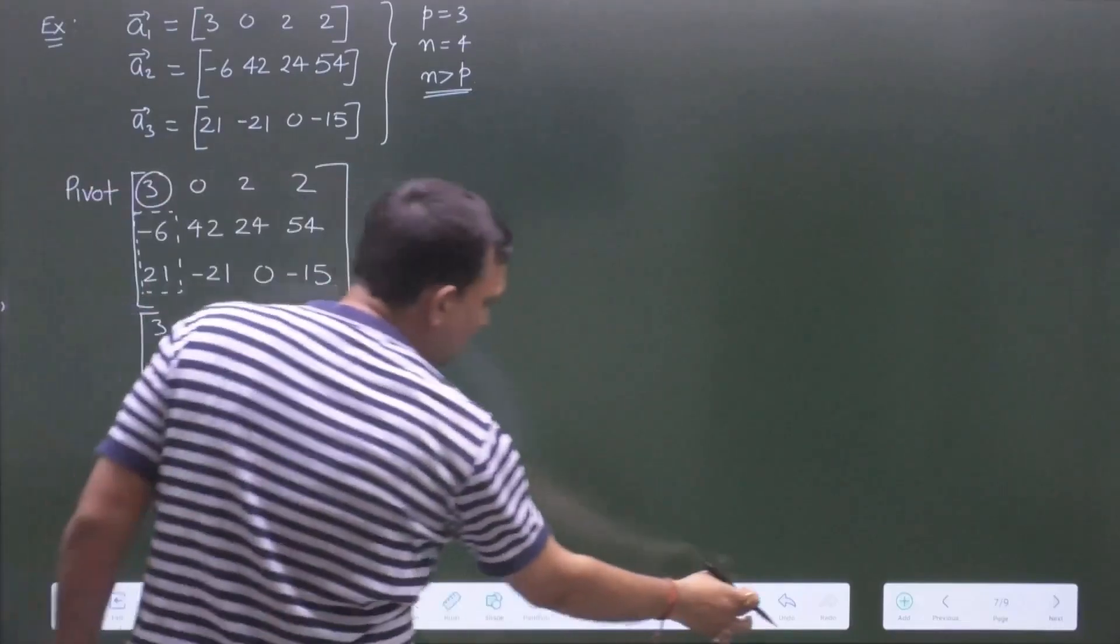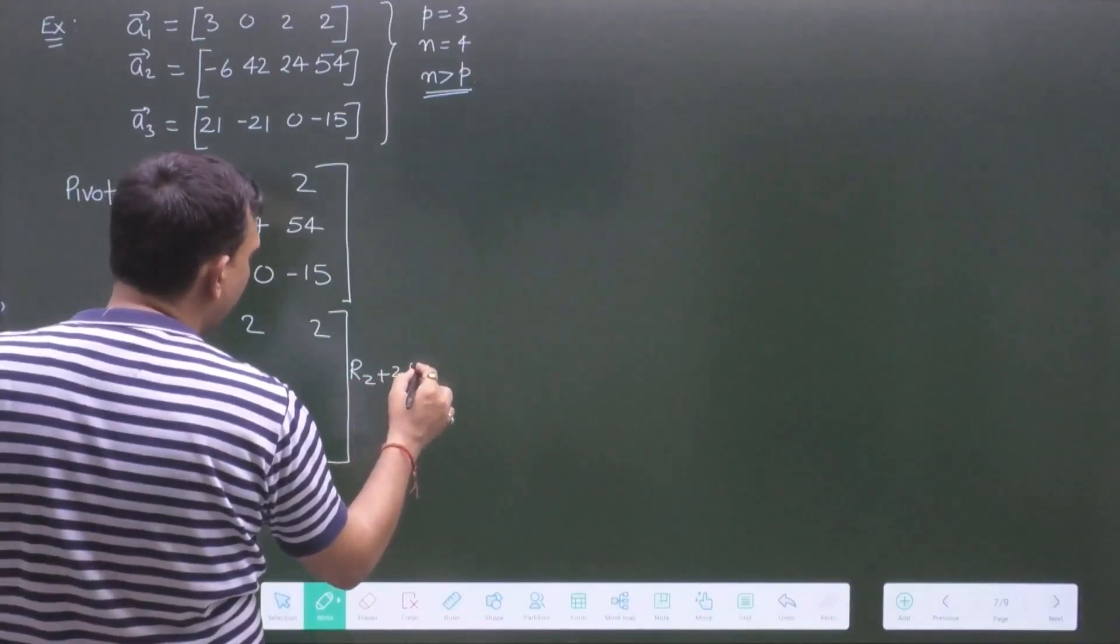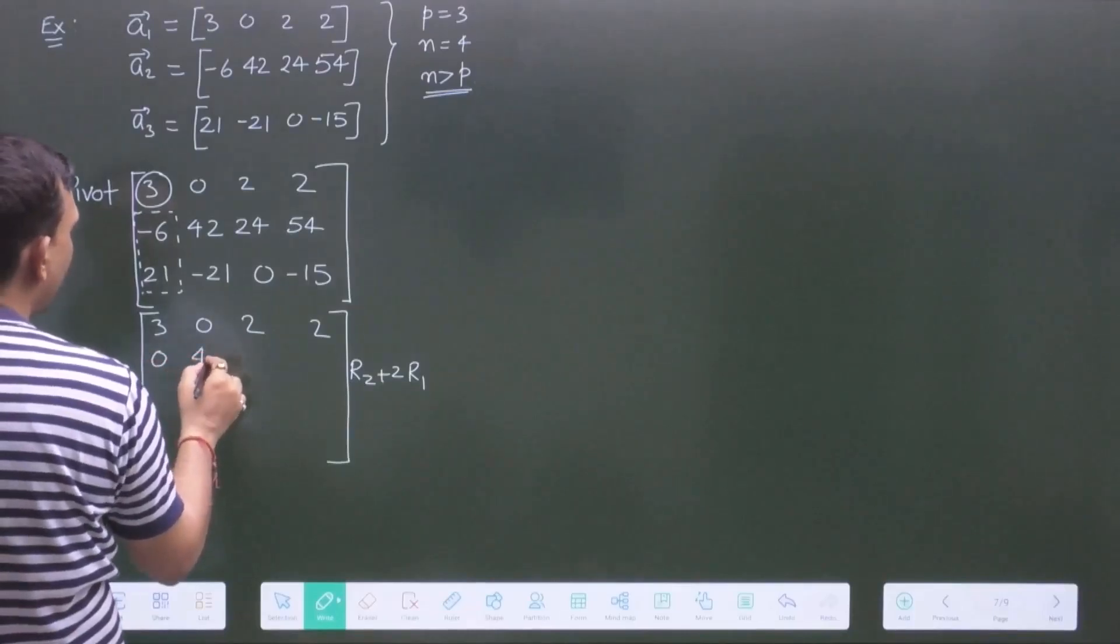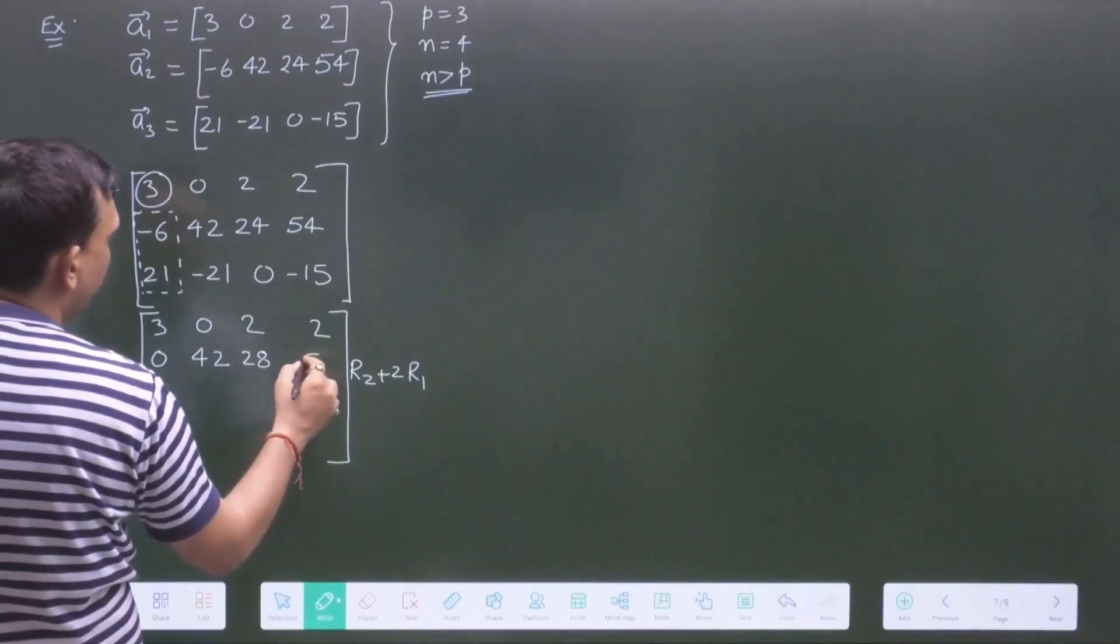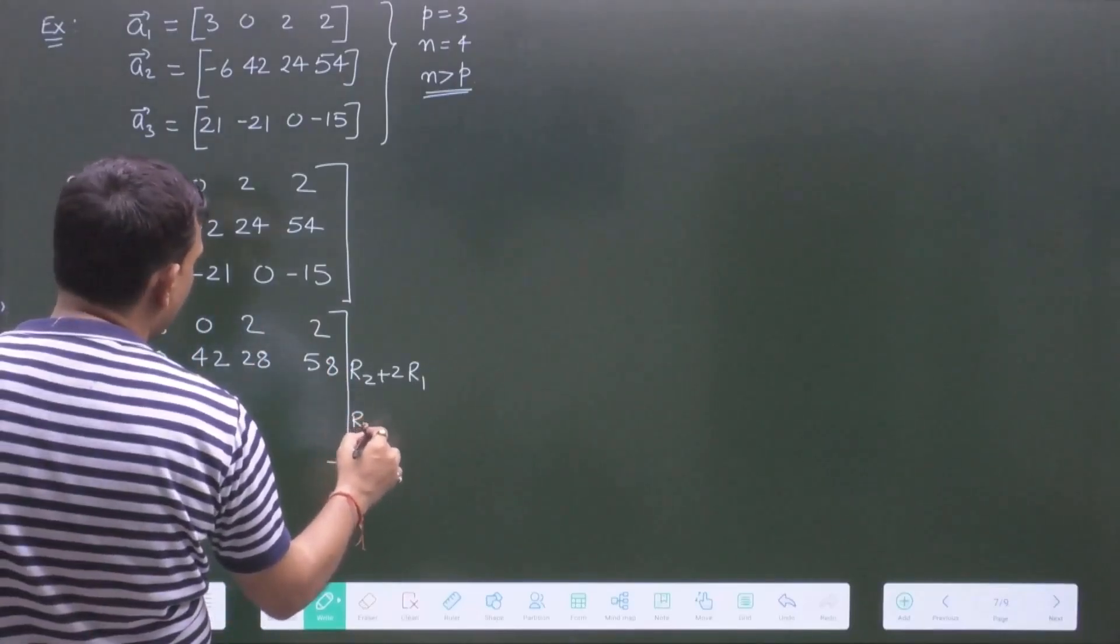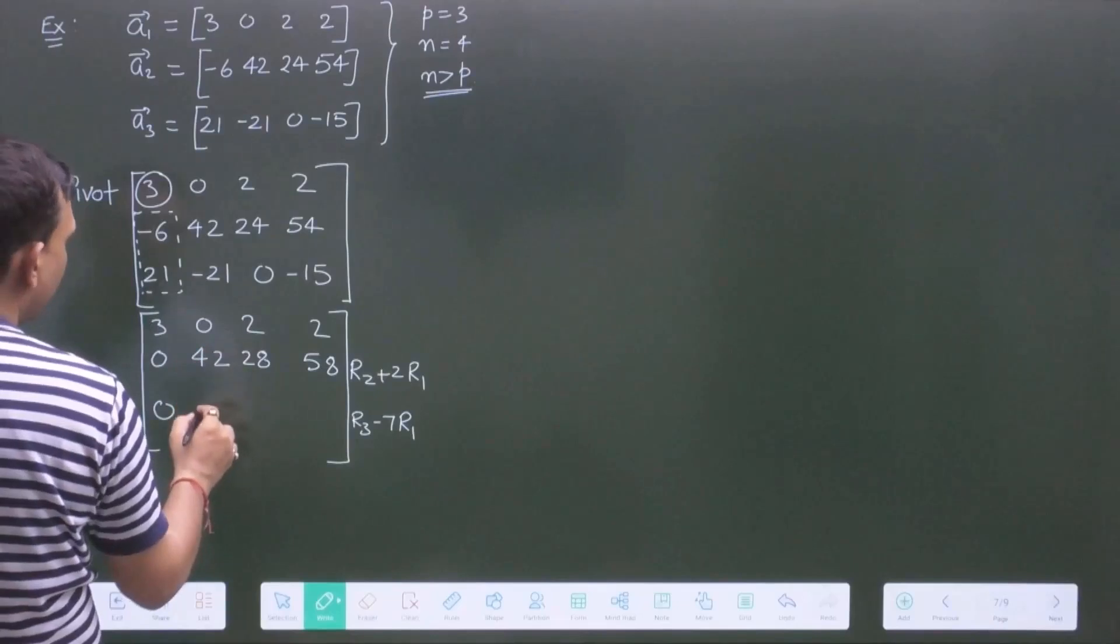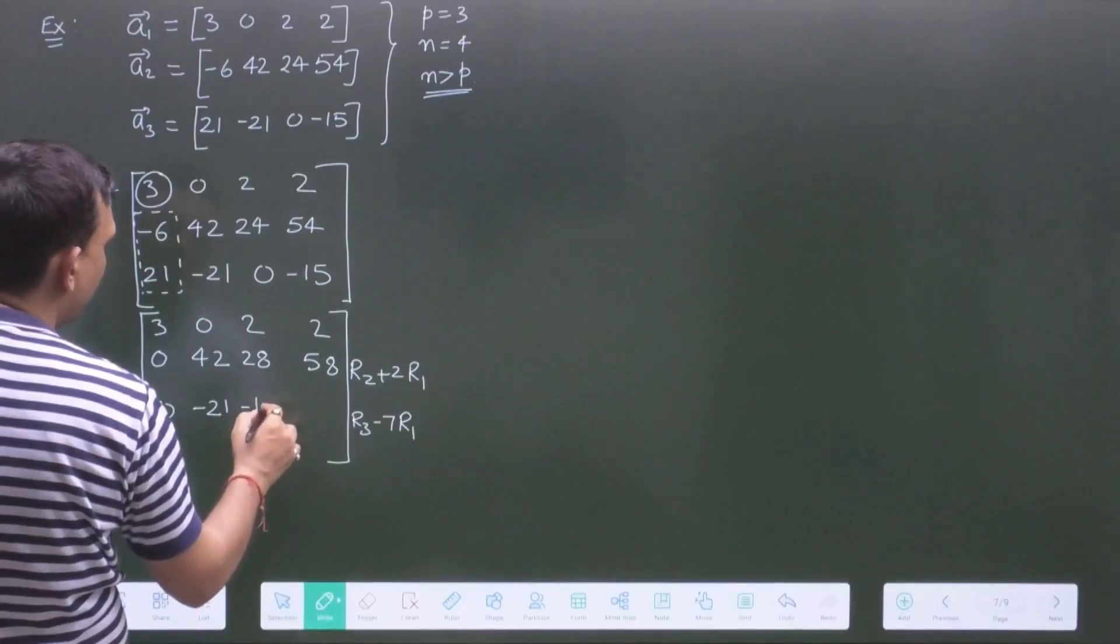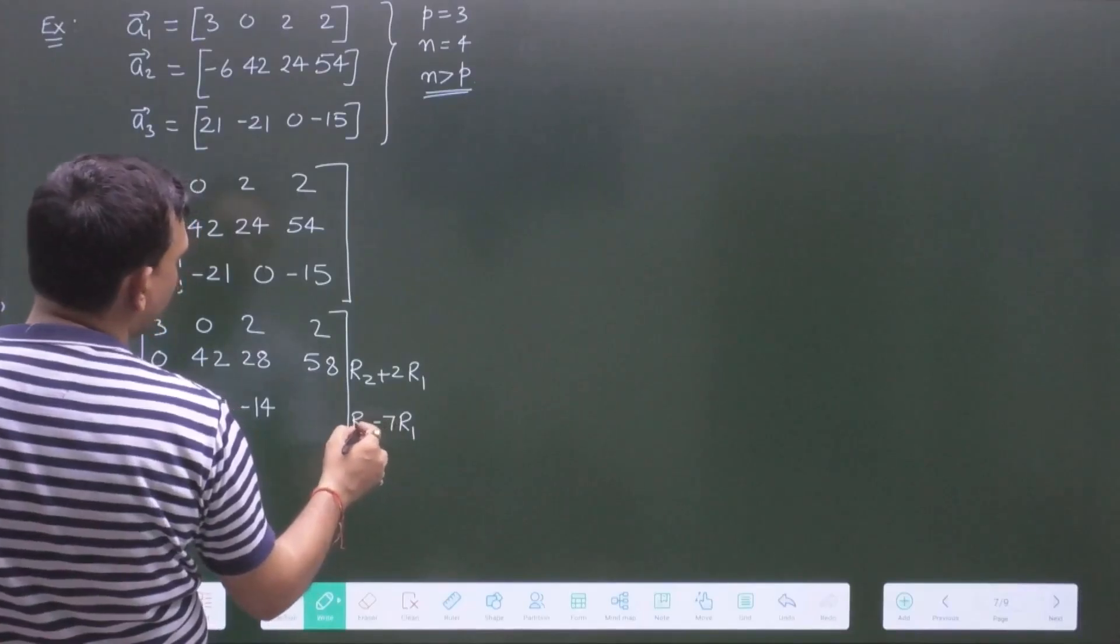R2 plus 2R1. So, this is 6. So, this will be 0. This is 42, this is 28, 58. And what about this? R3 minus 7R1. So, this is 0, this is minus 21, minus 14, and this will be minus 29.